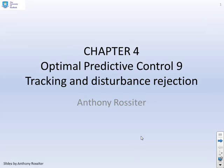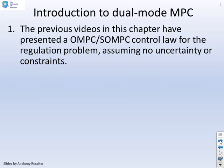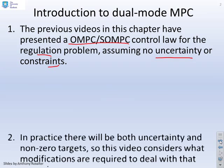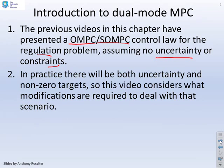The ninth video in Chapter 4 looks at how you introduce tracking and disturbance rejection into optimal predictive control. The previous videos have presented the OMPC or SOMPC control law but looked solely at the regulation problem, assumed no uncertainty and no constraints. In practice, of course, we will have uncertainty and non-zero targets. This video is going to look at how we modify what we've presented so far in order to deal with this.